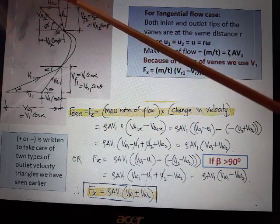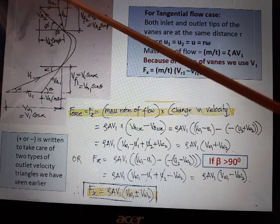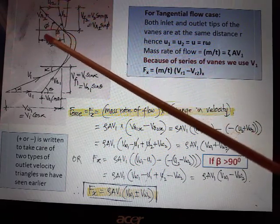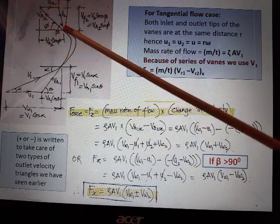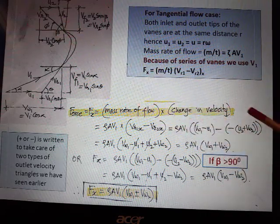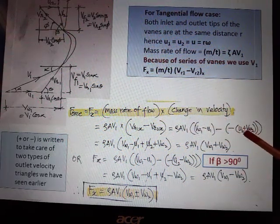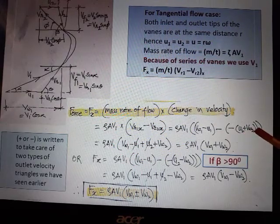So u2 plus Vw2 would be making Vr2*cos(φ) or x component of Vr2. So here u2 plus Vw2, this negative sign is because it is going left towards.